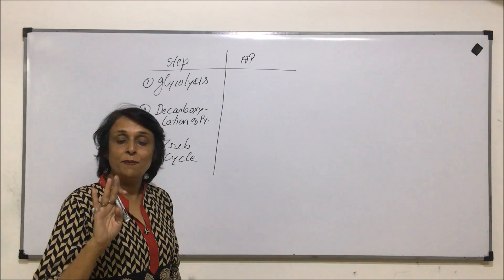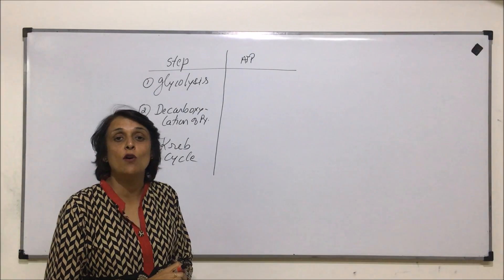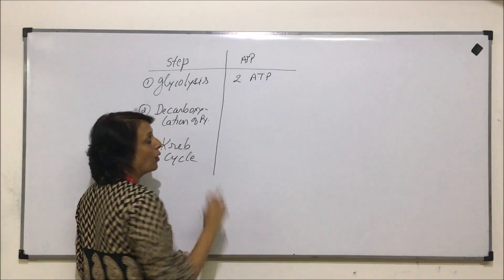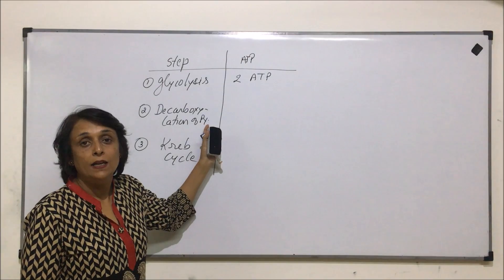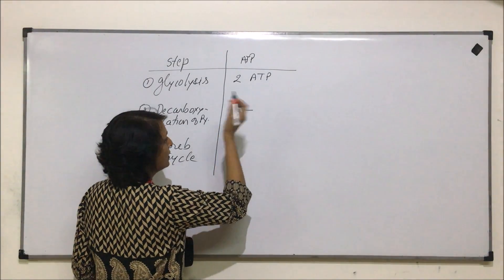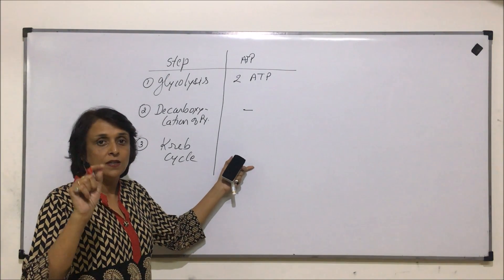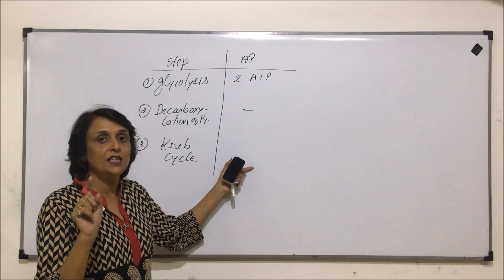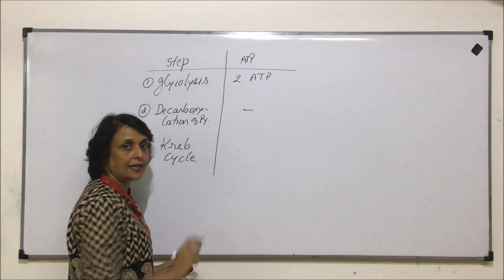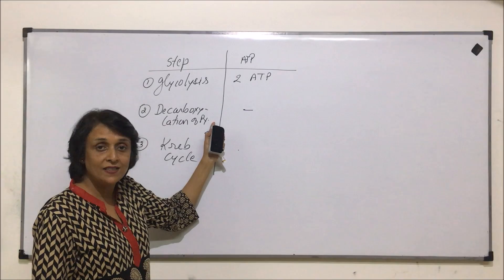In glycolysis, four ATPs are synthesized in all, but two are spent in the first half — the energy investment phase — so we get only two ATPs. In the decarboxylation process there is no ATP; we are getting only NADH. In Krebs cycle, succinyl coenzyme A to succinic acid involves one GDP to GTP conversion, which ultimately gives us ATP.